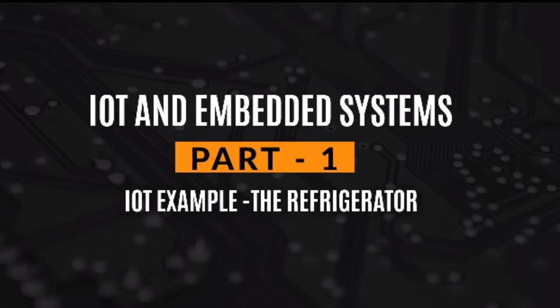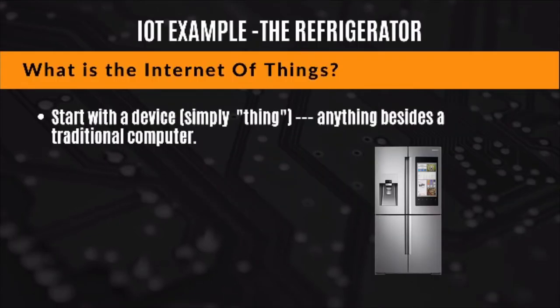We'll go through a refrigerator example and talk about how a refrigerator can be integrated into the Internet of Things, and how it's different than just a regular traditional refrigerator that you're probably used to. What is the Internet of Things? Start with a device — simply a thing — anything besides a traditional computer.